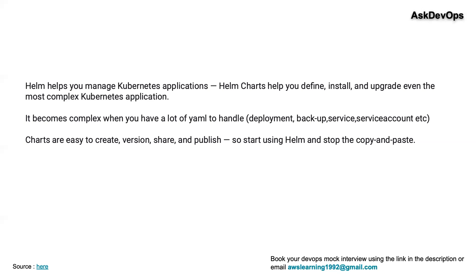So how will you answer this in the interview? Helm is a way of maintaining your Kubernetes application, and it helps you to upgrade, deploy, and roll back your Kubernetes application. When you have more than one application in a Kubernetes cluster, it will become difficult to manage all of the smaller files related to each application, and Helm charts solve this problem.